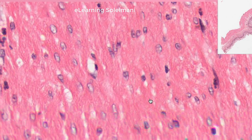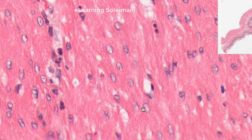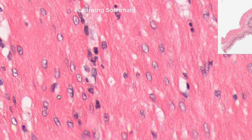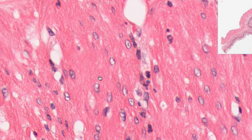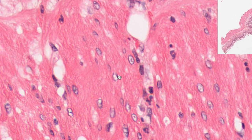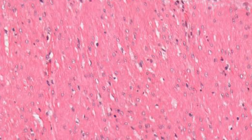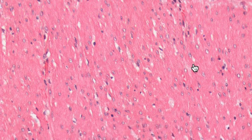In the transverse section of the smooth muscle, different cell sizes are visible due to the spindle shape of the cells. Depending on the location of the slice, some cells may have nuclei and others may not.